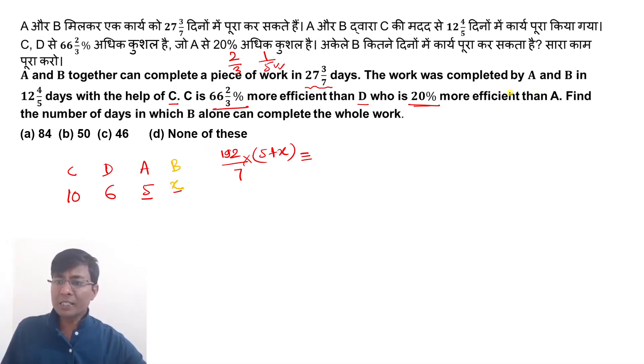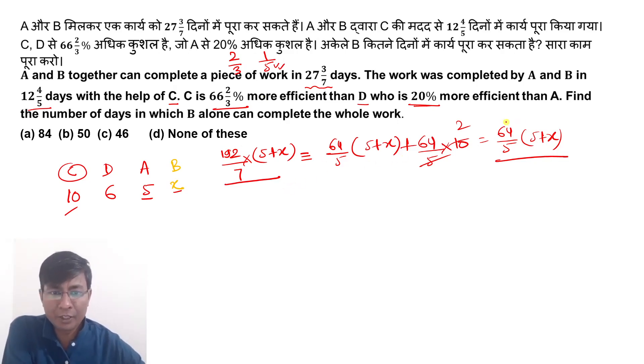This will be equal to A and B with C's help in 12 4/5 days, which is 64 by 5 days. A and B efficiency is 5 plus x and C is 10. You multiply 5, easily cut two times, so you can write 64 by 5 into 5 plus x.